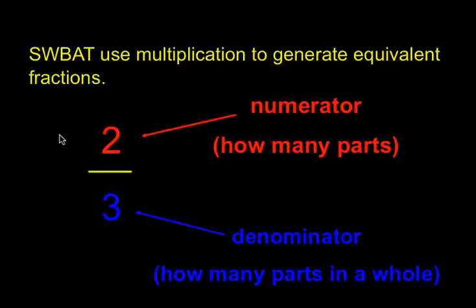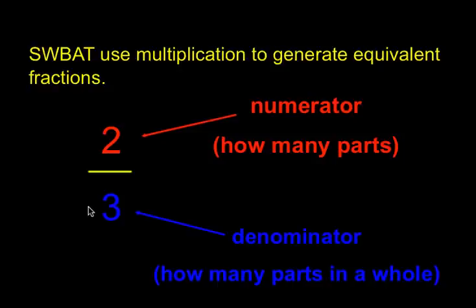Hello. In this video, I'll be teaching you how to use multiplication to generate or to make equivalent fractions. Just as a quick review, remember the numerator is the number on top of the fraction, which shows how many parts — if it's an area model, maybe it's the parts that are shaded or the part of the whole you're talking about. And the denominator is the number on the bottom, and it shows how many parts are in a whole — whatever whole group, whole picture, or whole region you're talking about.